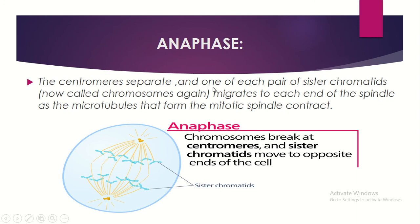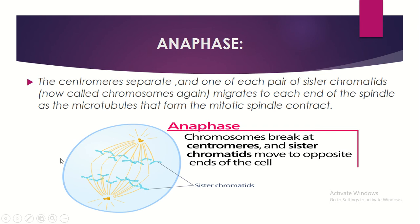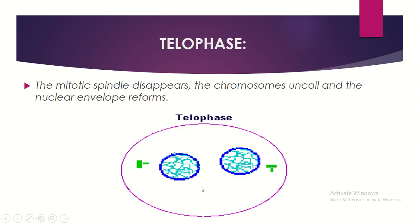In anaphase, the centromeres separate, and one of each pair of sister chromatids — now called chromosomes again because they are divided — migrates to each end of the spindle as the microtubules of the mitotic spindle contract. Everything is separated during anaphase. In telophase, the mitotic spindle disappears, the chromosomes uncoil, and the nuclear envelope reforms.